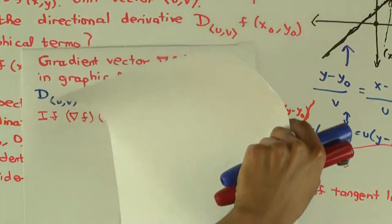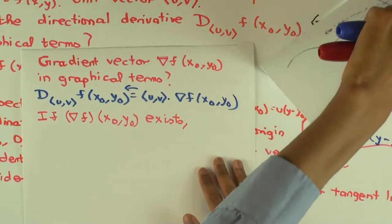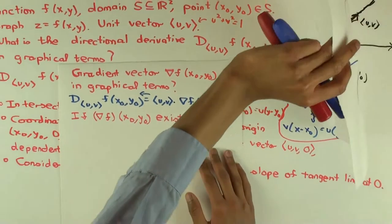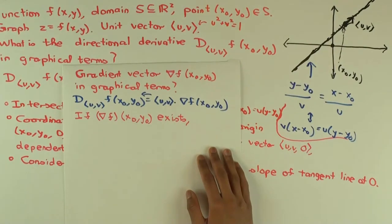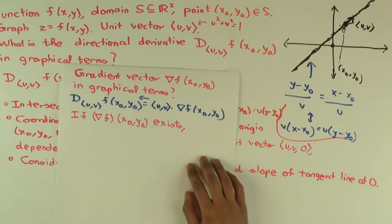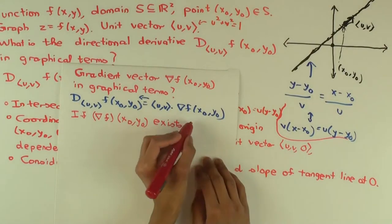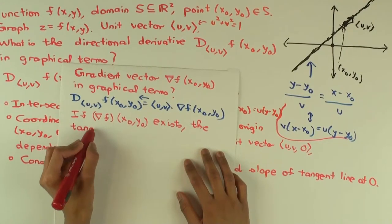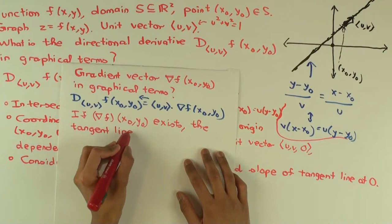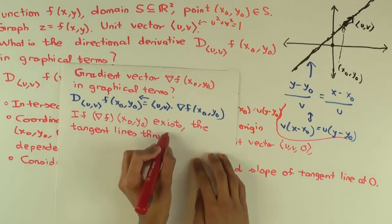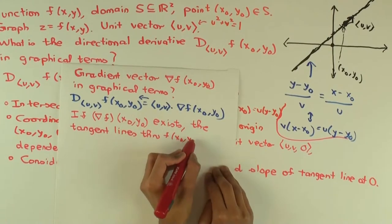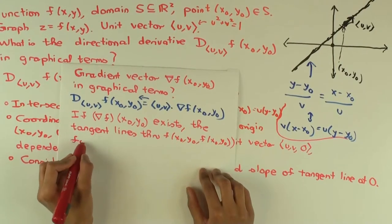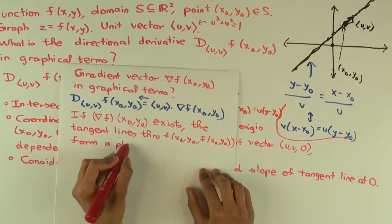And now you rotate. Now you rotate this plane. That is, you change the unit vector direction but keep the point the same. So you rotate the plane and you get different tangent lines, all passing through the point (x₀,y₀,f(x₀,y₀)). So you get different tangent lines. And if the gradient vector exists, then all these form a what? Tangent plane. They form a plane, and that plane is called the tangent plane.